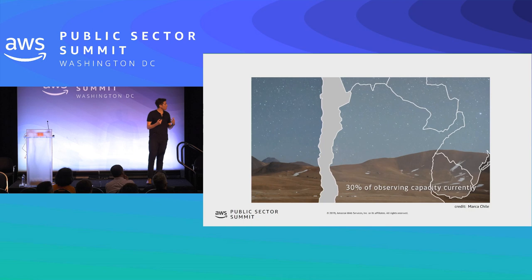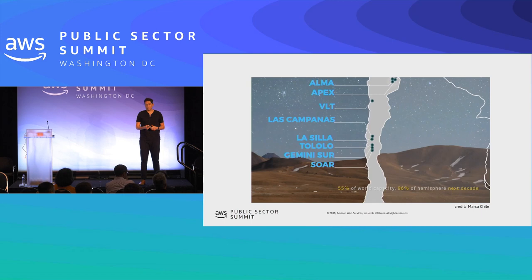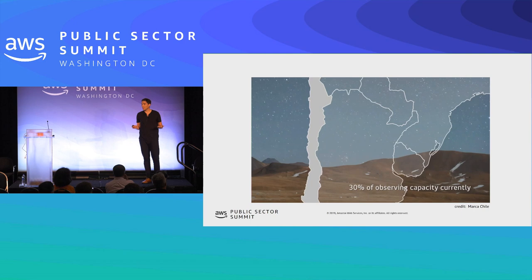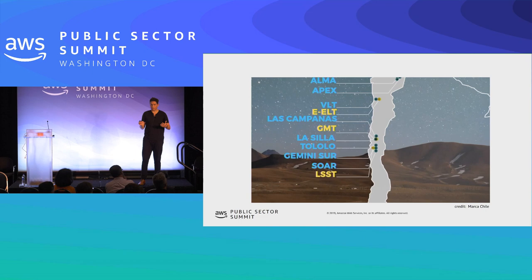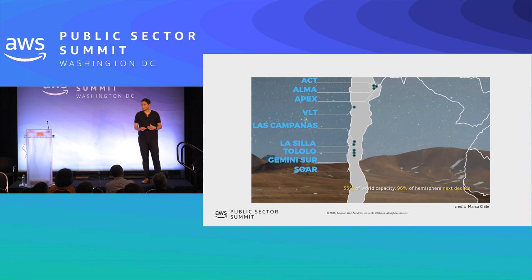Thinking about Chile, this long and thin country I come from, it is concentrating — next decade — about 60% of the astronomical observing capacity of the world. It's not just a National Science Foundation investment, but also European and Asian investment across continents. This will amount to about 20 petabytes of data per year — large volumes.